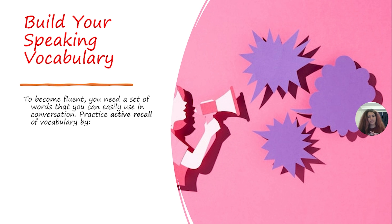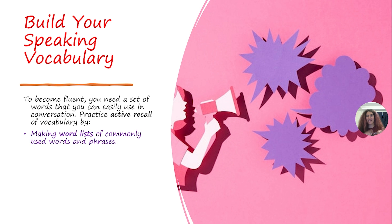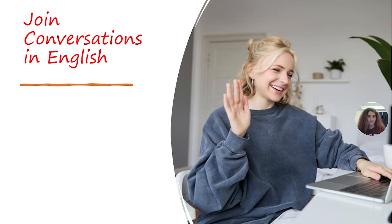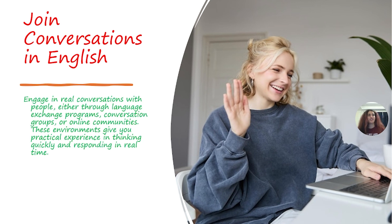The fifth way is to build your speaking vocabulary. To become fluent, you need a set of words you can easily use in conversation. Practice active recall of vocabulary by making word lists of commonly used words and phrases, using those words in your own sentences or conversations, and grouping vocabulary by themes like travel, daily routine, or work so you can easily recall words when speaking on those topics.